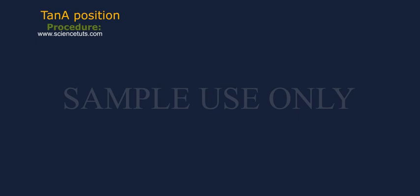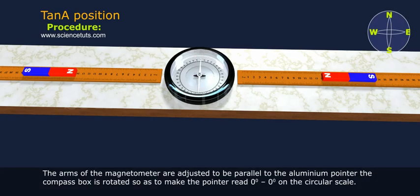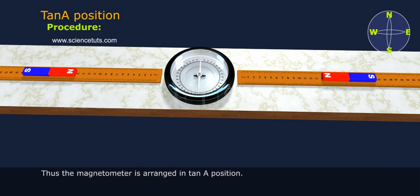TanA position procedure. The arms of the magnetometer are adjusted to be parallel to the aluminum pointer. The compass box is rotated so as to make the pointer read 0 degree to 0 degree on the circular scale. Thus, the magnetometer is arranged in TanA position.